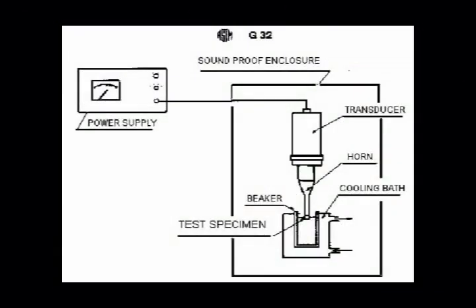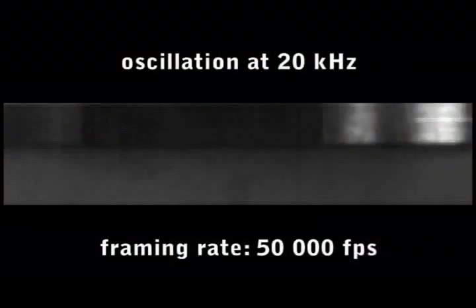Finally, we subjected rock specimen to an ASTM vibratory apparatus. A horn oscillating vertically at 20 kHz produces a periodic pressure field, which induces the growth and collapse of a cloud of cavitation bubbles, thus eroding the material placed beneath.